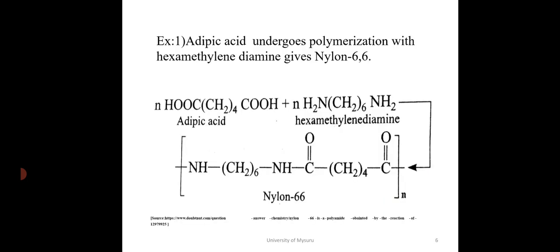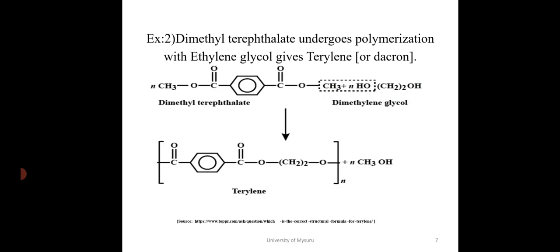For example, adipic acid undergoes polymerization with hexamethylene diamine to give Nylon 66. Second example: dimethyl terephthalate undergoes polymerization with ethylene glycol to give Terylene, also called Dacron.